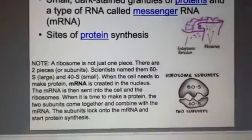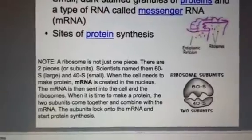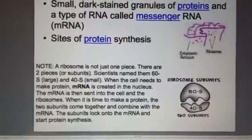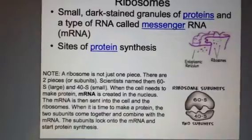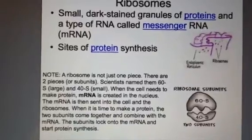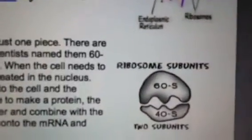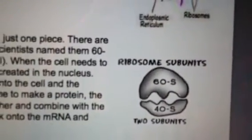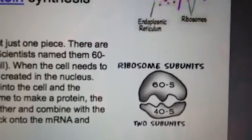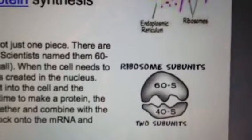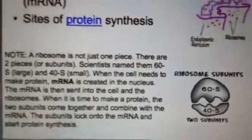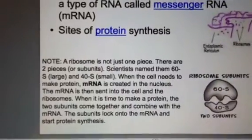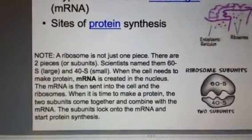The word synthesis means to make. To give you an idea: I'm going to synthesize dinner tonight means I'm going to make dinner tonight. A ribosome is not just one piece — there are actually two pieces called subunits, and scientists have named these 60S and 40S for the small piece, as annotated on the slide.